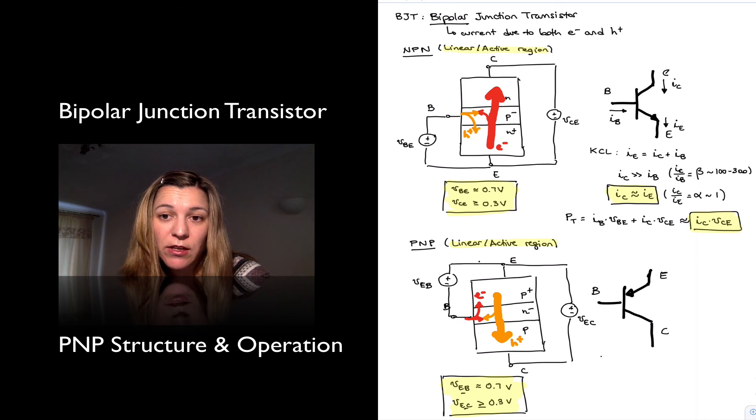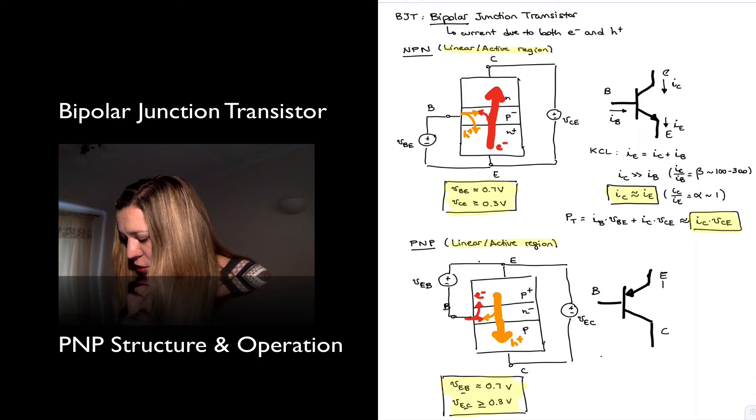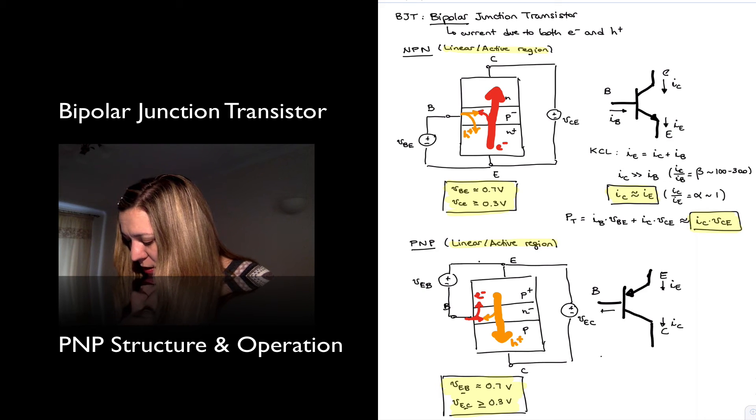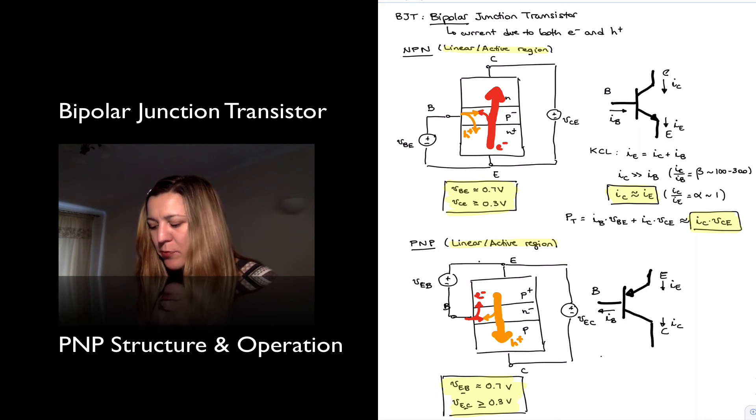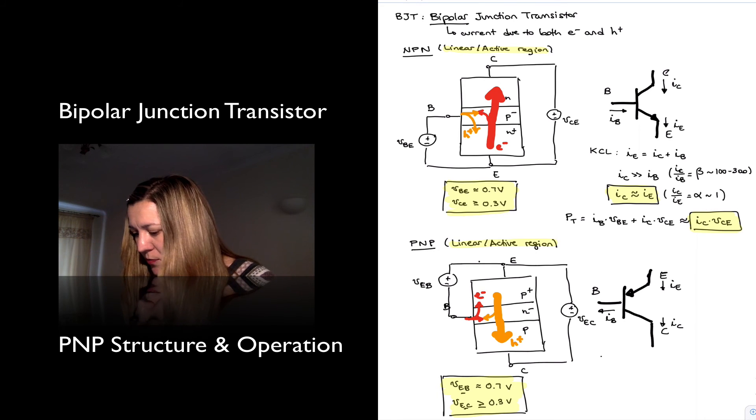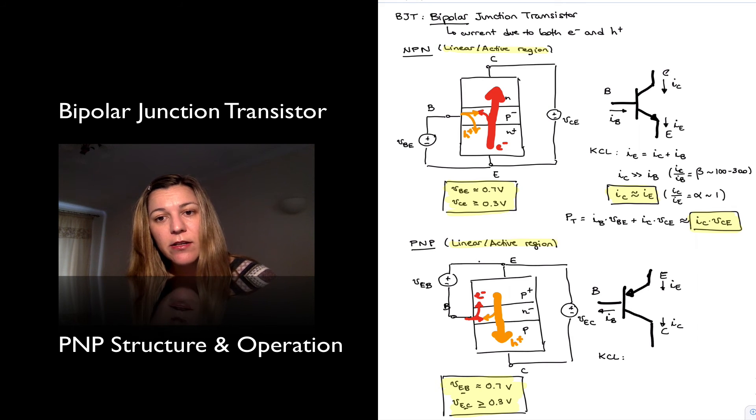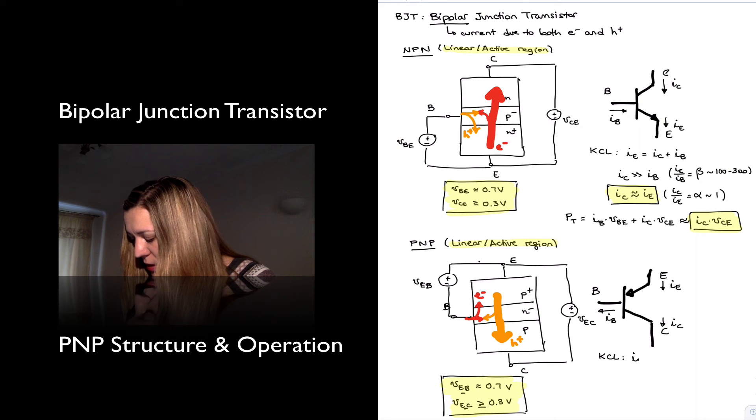And so this will be our IE, IC, collector current, and base current. Notice that again in the PNP transistor, now the currents have reversed polarity. The current is entering the emitter and leaving both the base and the collector terminals. Again, I can write KCL, and it's the same thing. Current entering the device must equal to the current leaving the device. And so in this case, current entering is IE, current leaving is the sum of IB plus IC, just like before.